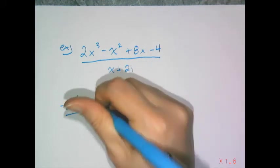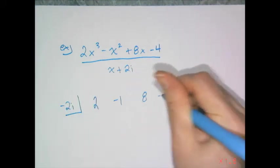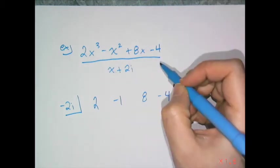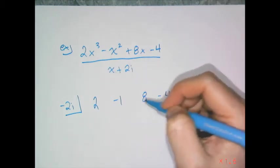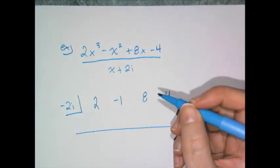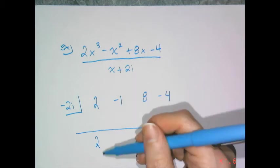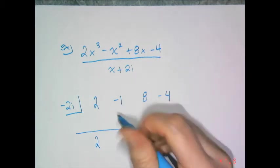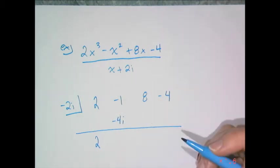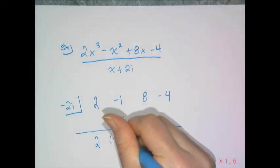Then I put my coefficients 2, negative 1, 8 and negative 4. Remember if one of the terms is missing, you need to put that zero placeholder in there. Same deal, the 2 gets carried down directly and then I multiply 2 times negative 2i, which gives me negative 4i. Then negative 1 plus negative 4i is negative 1 minus 4i.